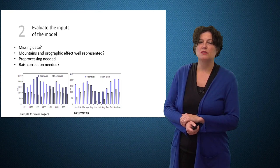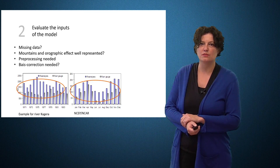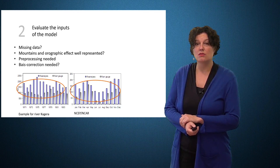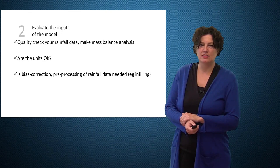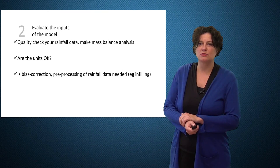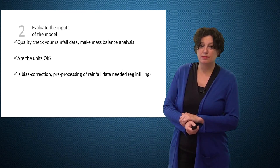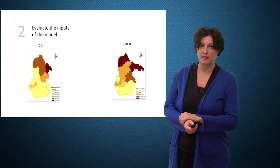In this example, reanalysis data was used for a catchment in Rwanda. We see that the annual values are strongly biased and are not correlated to the observed annual rainfall values. On the other hand, the monthly seasonalities are correlated. So, a bias correction could lead to some useful rainfall data. It is important to check the data and double check. Make sure that the units are correct and perhaps also perform a mass balance analysis. Are there no bias corrections? Is preprocessing needed? This is all to be considered before moving to modeling.